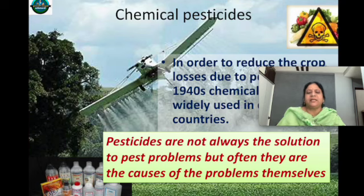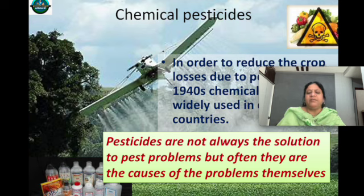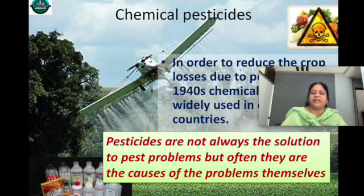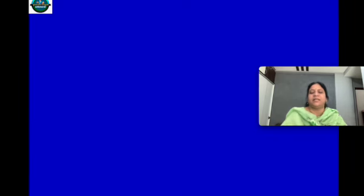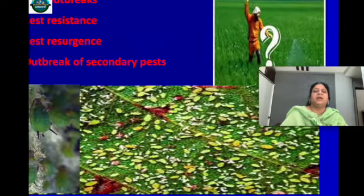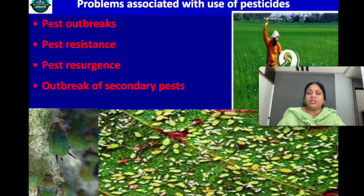Chemical pesticides were introduced in order to reduce crop losses. But instead of giving solutions, the pesticides became problems themselves — they are creating various types of problems. One of the problems they are creating is pest outbreaks, where outbreaks of pests are occurring and causing so much damage to the crops.